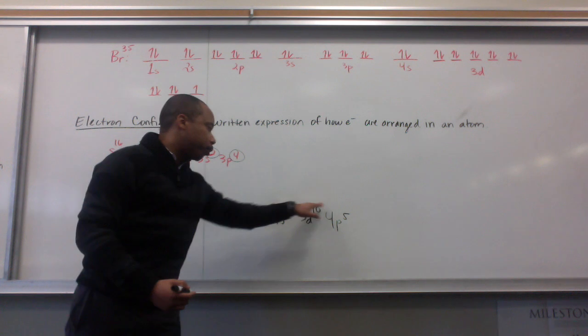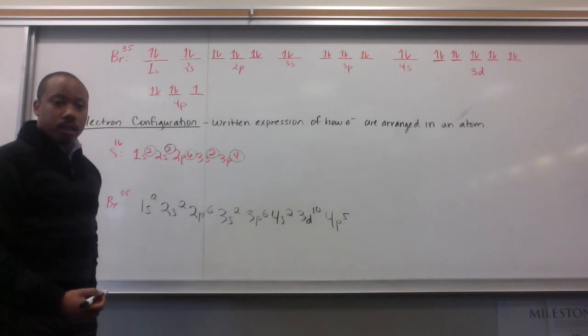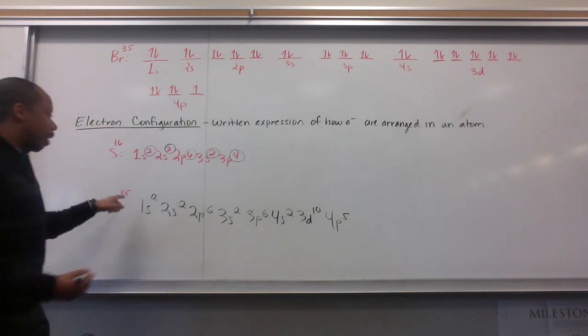And then 3d10, and then 4p5. If you count up all your superscripts, then you will have 35, counting up to your 35 electrons.